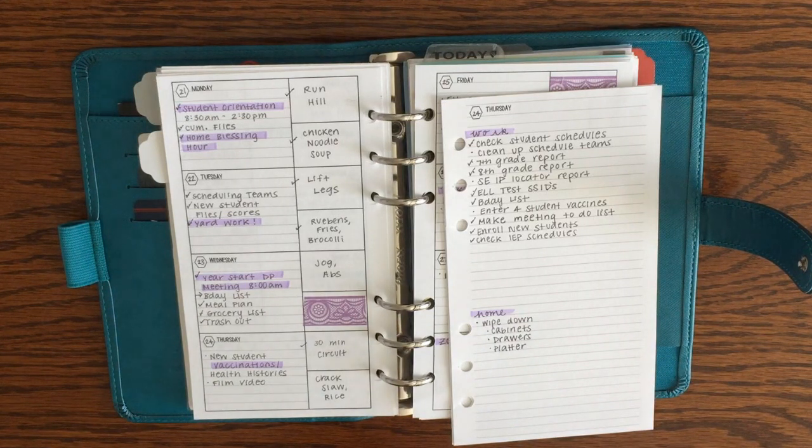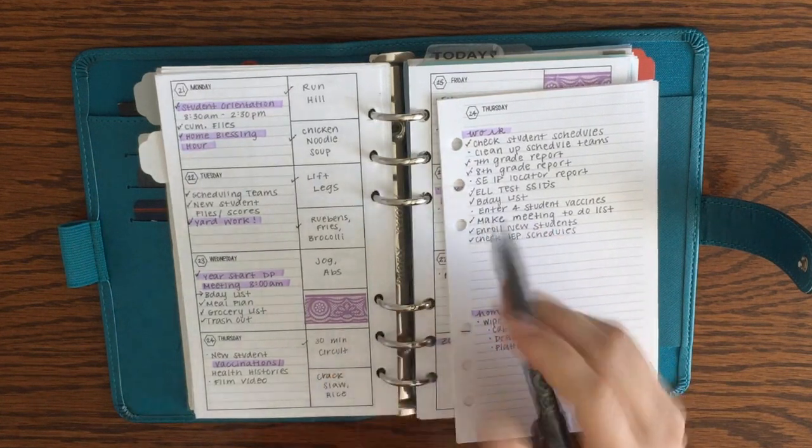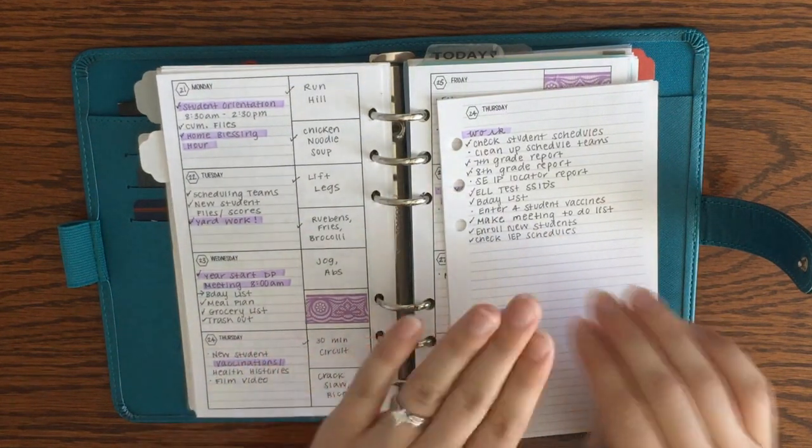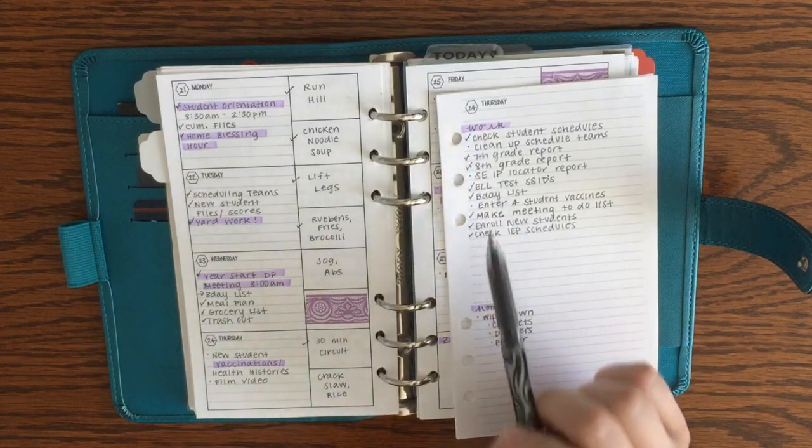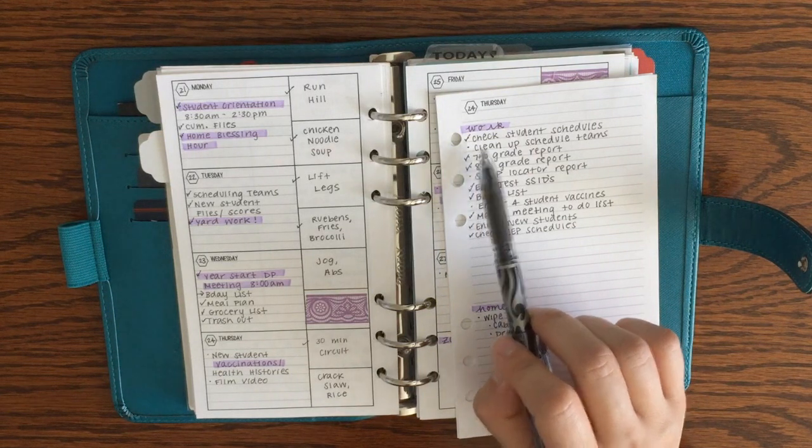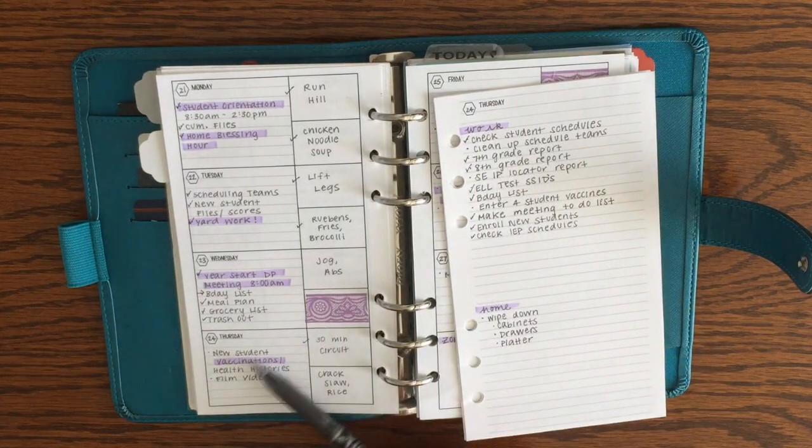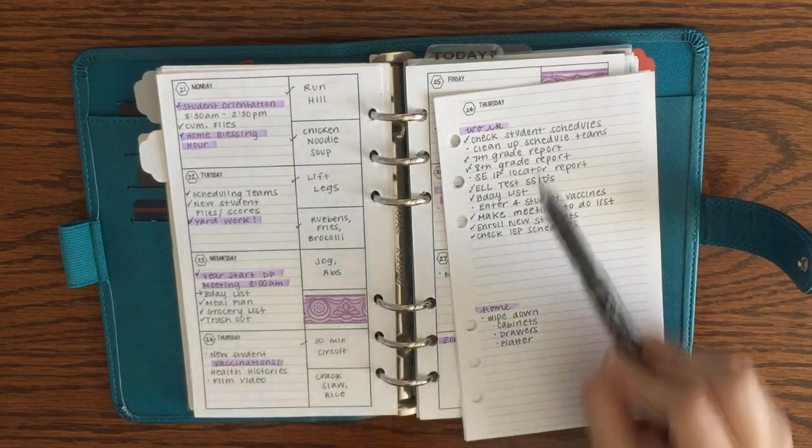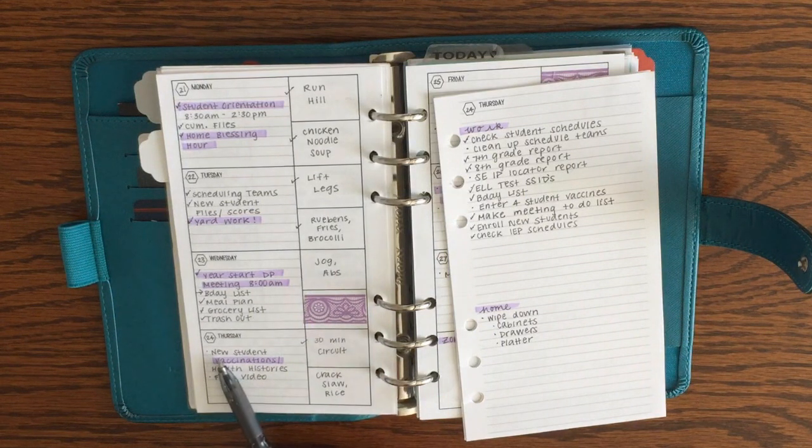What I do to plan my day is I look through and I look at the things that didn't get checked, both on the weekly page and on the daily page. Typically the daily page has smaller tasks or things that just pop up throughout the day, and then the weekly page has really big tasks that I often have to break down into smaller tasks.